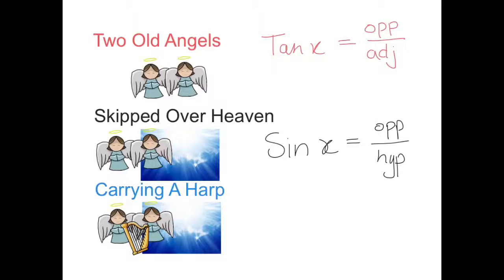And the third one, carrying a harp, represents the ratio for what we call cosine. Cosine. And cosine we just write as cos x. The cosine of angle x. And that ratio, that fraction, is the adjacent divided by the hypotenuse.